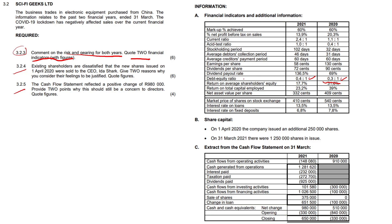The second indicator they want us to look at is return on total capital employed. Return on average shareholders' equity is return on our own capital, whereas this question is talking about risk and gearing involving borrowed capital — so we go back to return on total capital employed. Total capital employed covers the whole capital figure: own capital and borrowed capital. The return is basically your profit before interest payments are made.